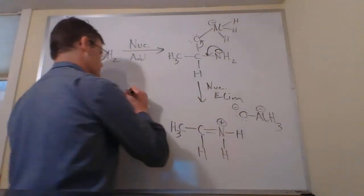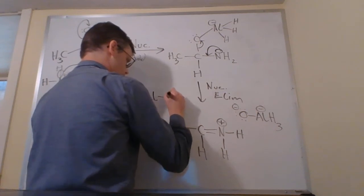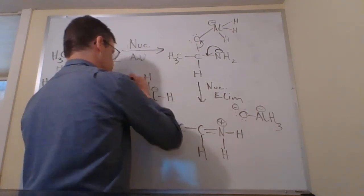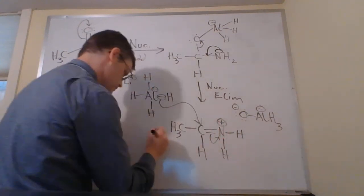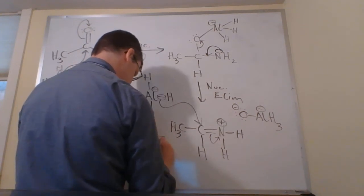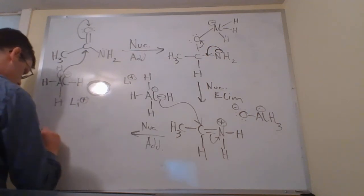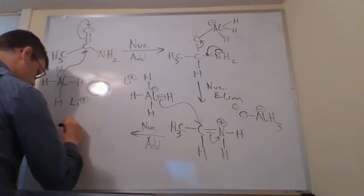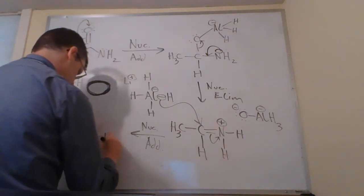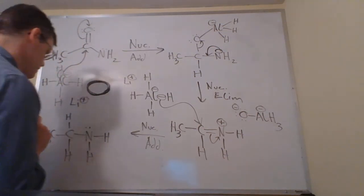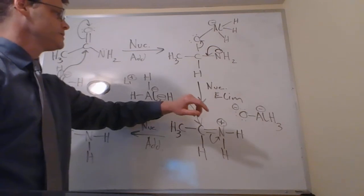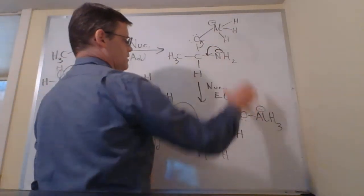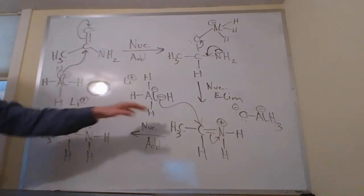And then what can happen to kind of complete this mechanism, we can have another nucleophilic addition. We're going to add a second equivalent of hydride. And that ultimately leads us to our product, which is a primary amine. And so, just in summary here for our reduction of this primary amide to a primary amine, we did a nucleophilic addition followed by a nucleophilic elimination, where our leaving group is this leaving group that has an oxygen aluminum bond. And then we do a second nucleophilic addition.